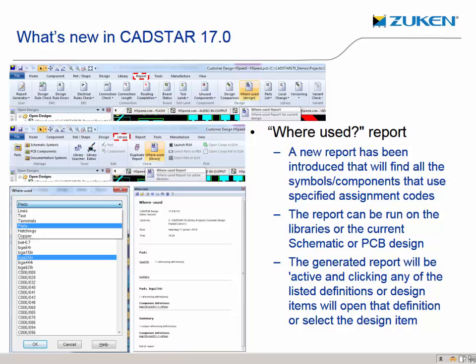The where-used report includes lines, text, terminals, pads, hatchings, and copper codes. The generated report will be active and clicking any of the listed definitions or design items will open that part's definition or select the design item within a design. This will be very useful for library maintenance, and multiple assignments can be selected using the normal shift or control key methods.